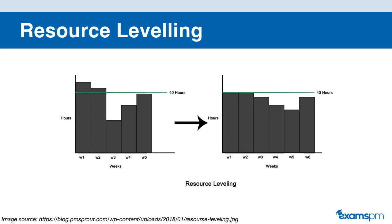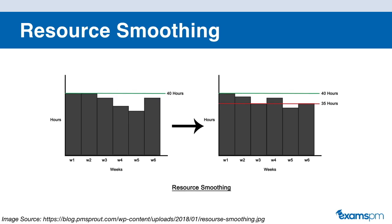The second resource optimization technique is called resource smoothing. You use resource smoothing when you have to optimize the resources and you cannot extend the schedule. As we can see from this diagram on the left-hand side, in weeks one and two you're using the resource at full capacity of 40 hours, while in weeks four and five you're using it a lot less. So what you're doing in resource smoothing is readjusting the schedule a little bit so that the resource has an even amount of work throughout the six weeks.